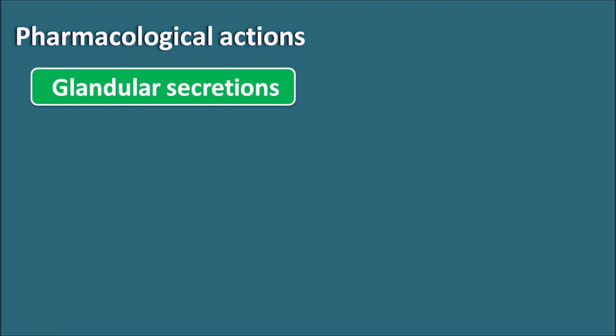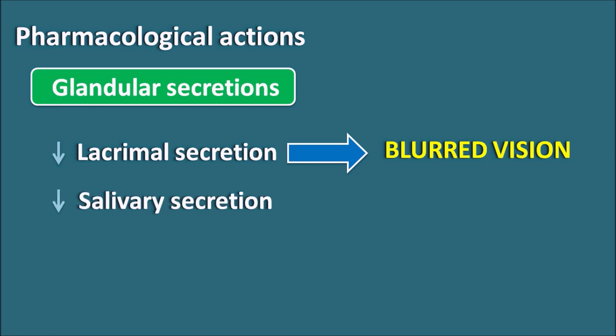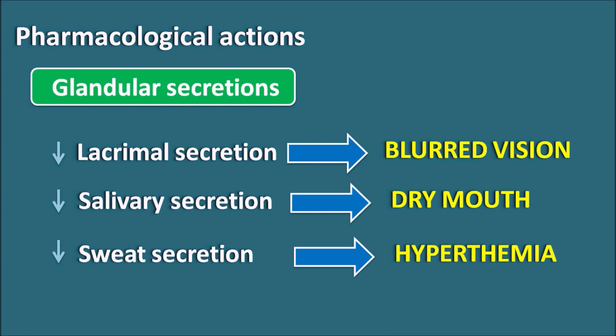Next — glandular secretions. Normally acetylcholine increases glandular secretions through M3 receptors. Anticholinergics block M3 receptors, inhibiting glandular secretions. Lacrimal secretion is inhibited, resulting in blurred vision because lacrimal fluid is important for lubrication of the eye. Similarly, they decrease salivary secretion resulting in dry mouth.